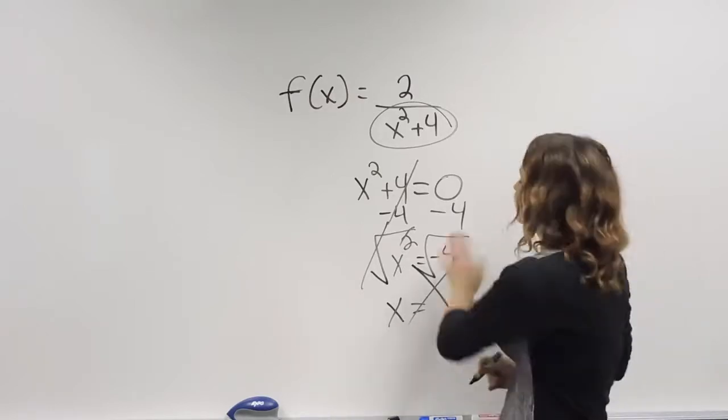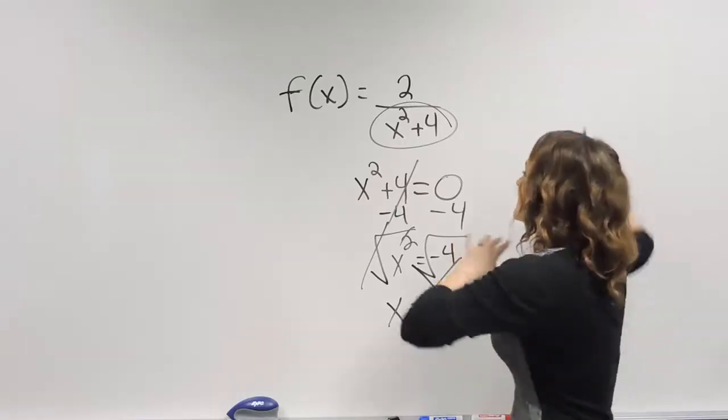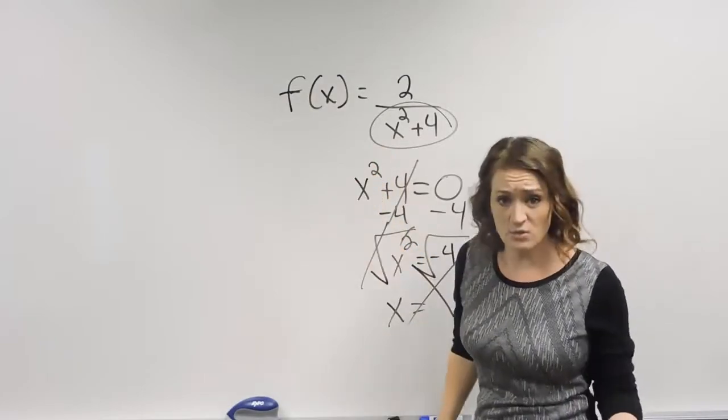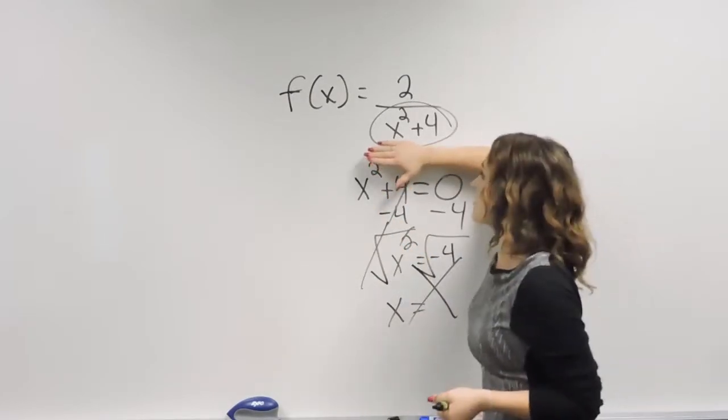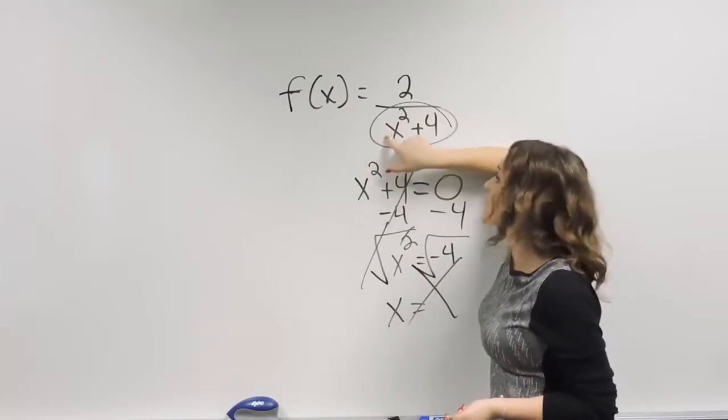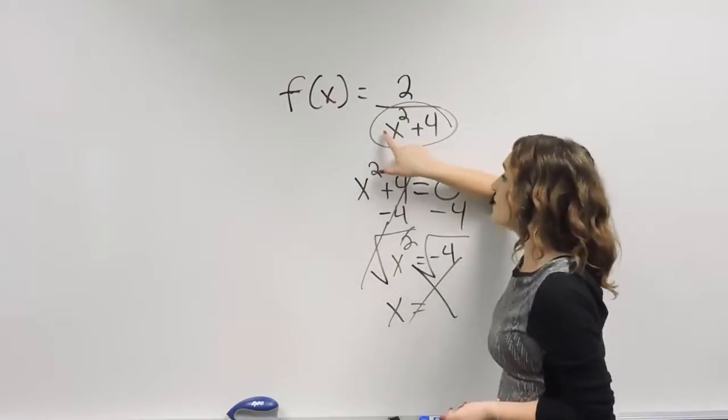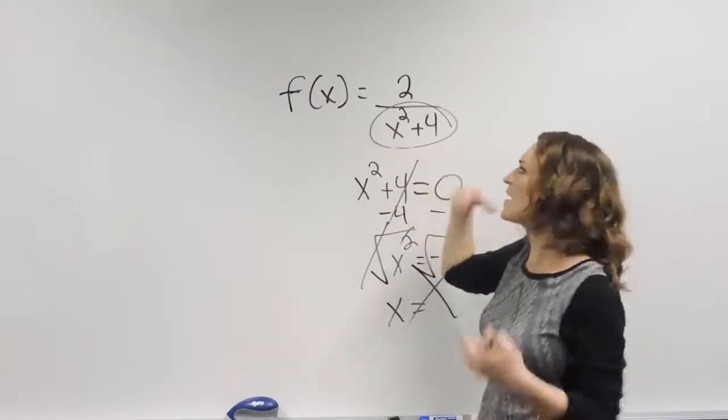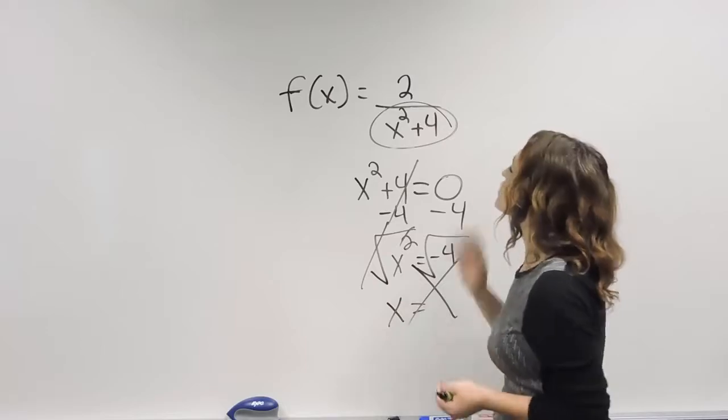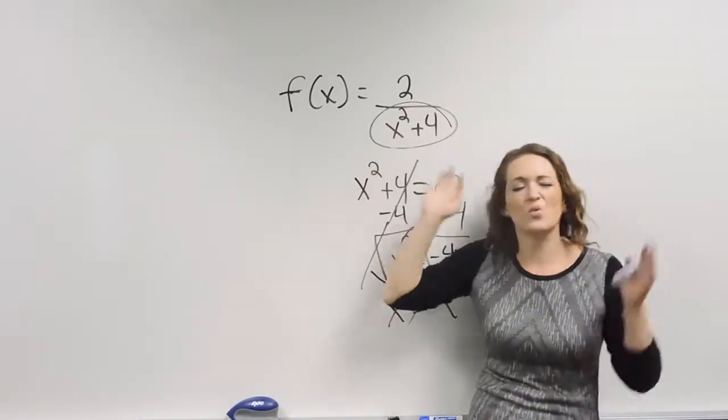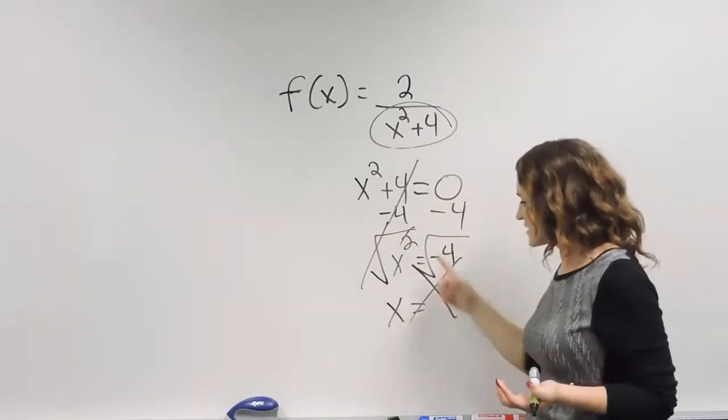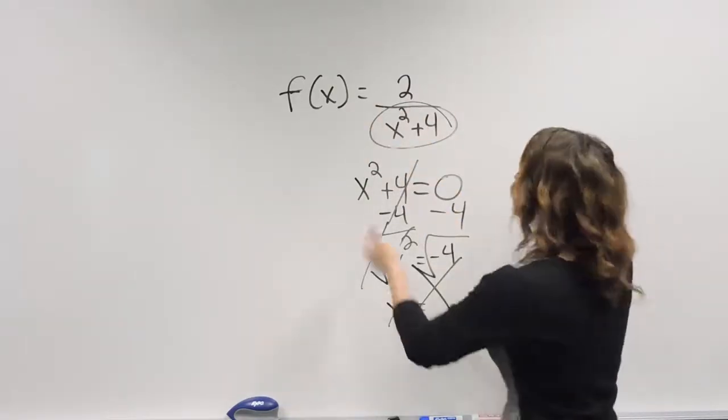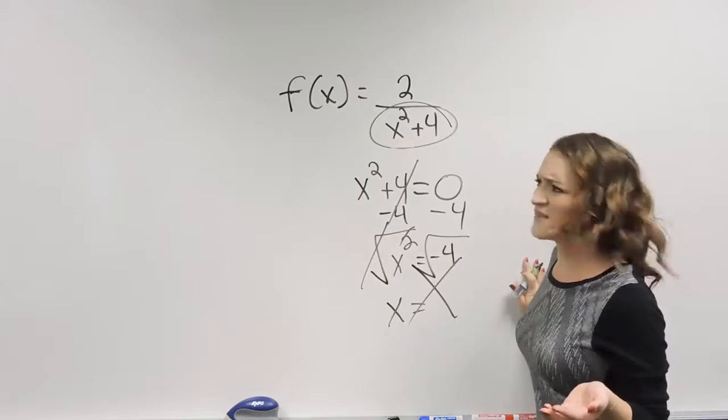What that's telling me, if you get left with this situation here, is there's nothing that I can plug in to this problem that would make it equal 0. Think about it here. Here's our denominator. Think about any numbers that you can plug in for x that would make this whole thing equal 0. Even if I plugged in a 0 for x, that would make this 0, but I'm still adding 4 to it. Regardless of positive or a negative number, there's no possible way that this denominator would ever equal 0.